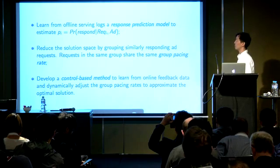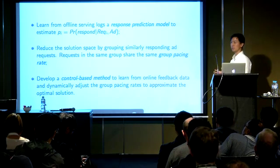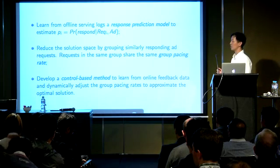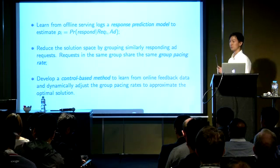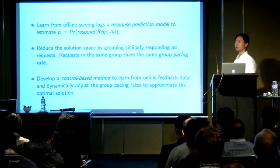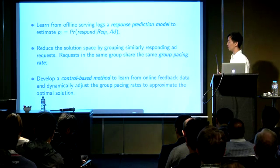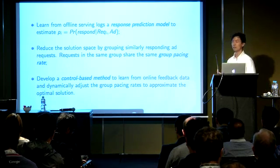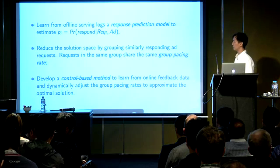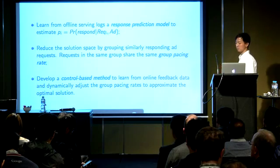Based on these observations, we designed our model and algorithms. First, we learn from offline serving logs a response prediction model to predict the response rate of an ad request for a given ad campaign. Then we reduce the solution space by grouping similarly-responding ad requests together into several groups, where requests within the same group share the same group pacing rate. At serving time in the online environment, we use a control-based method to learn from real-time feedback of online delivery data and dynamically adjust the group pacing rate to approximate the optimal solution.